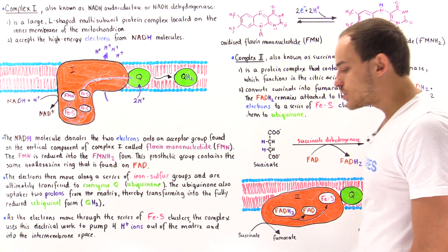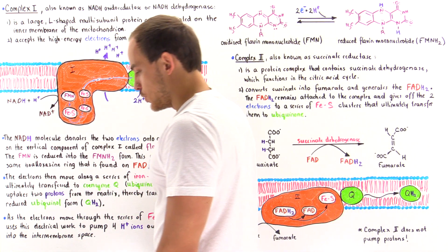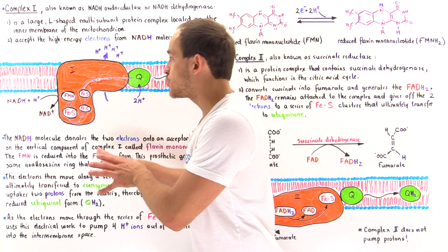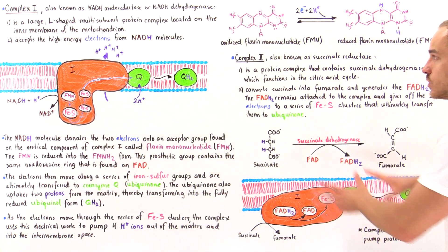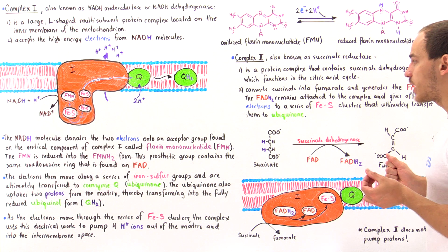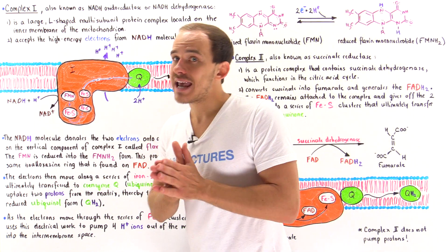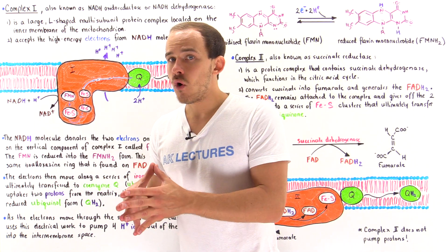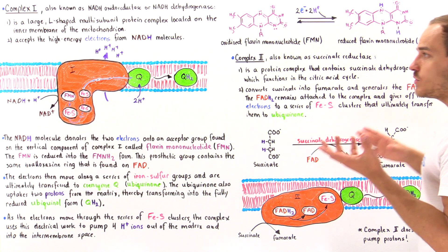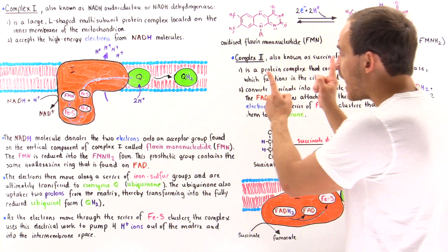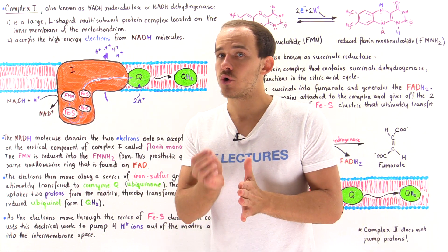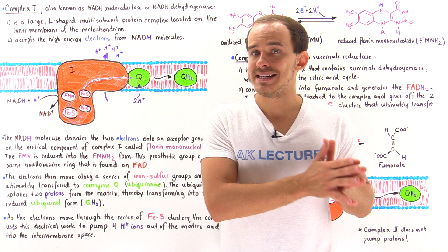Now let's move on to complex 2. Complex 2 is not a proton pump — that is the main difference between complex 2 and complexes 1, 3, and 4. Because of this, fewer ATP molecules will be formed from FADH2 than from NADH. Complex 2 is responsible for extracting electrons from FADH2 molecules.